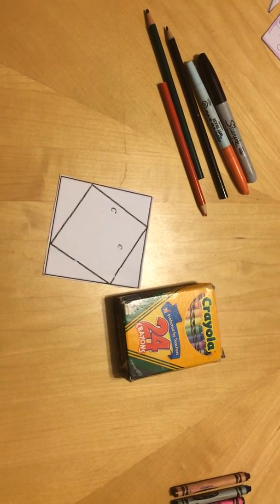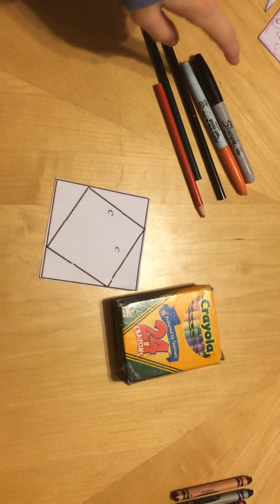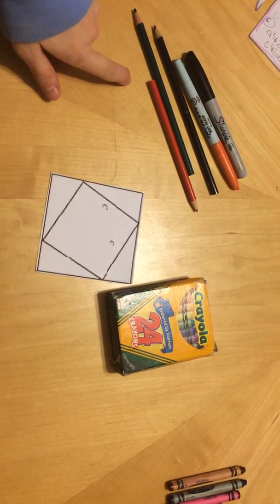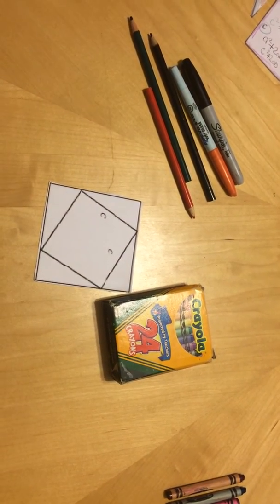For this Geometry Pythagorean Theorem hands-on activity, you will need markers, colored pencils, crayons, this piece of paper, and scissors.